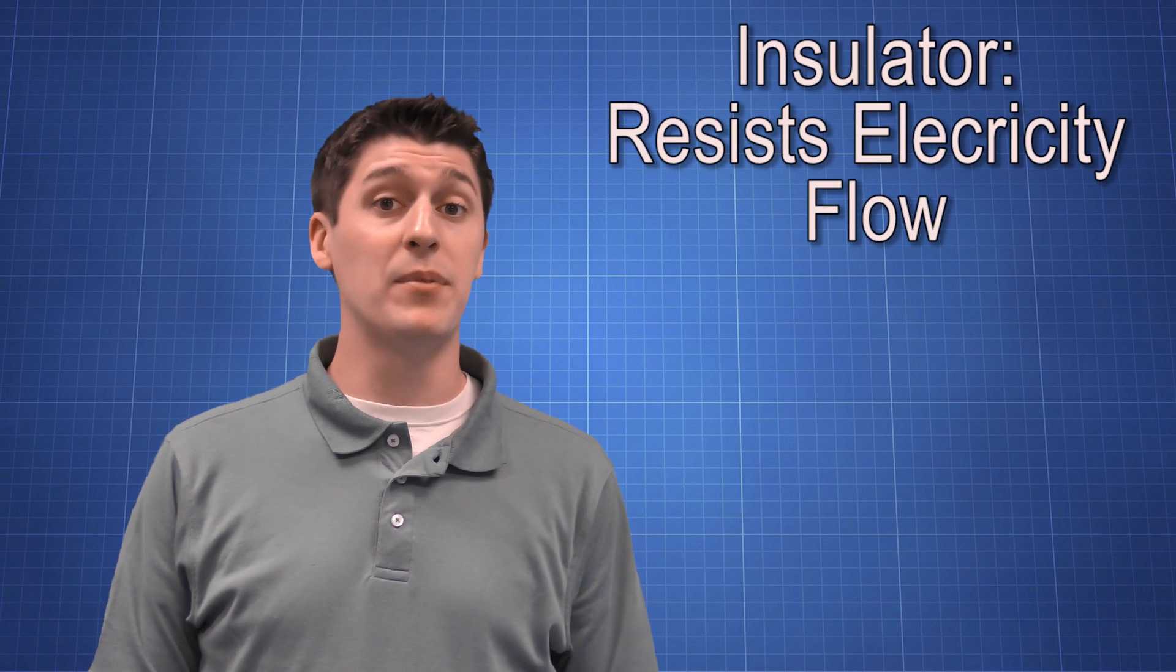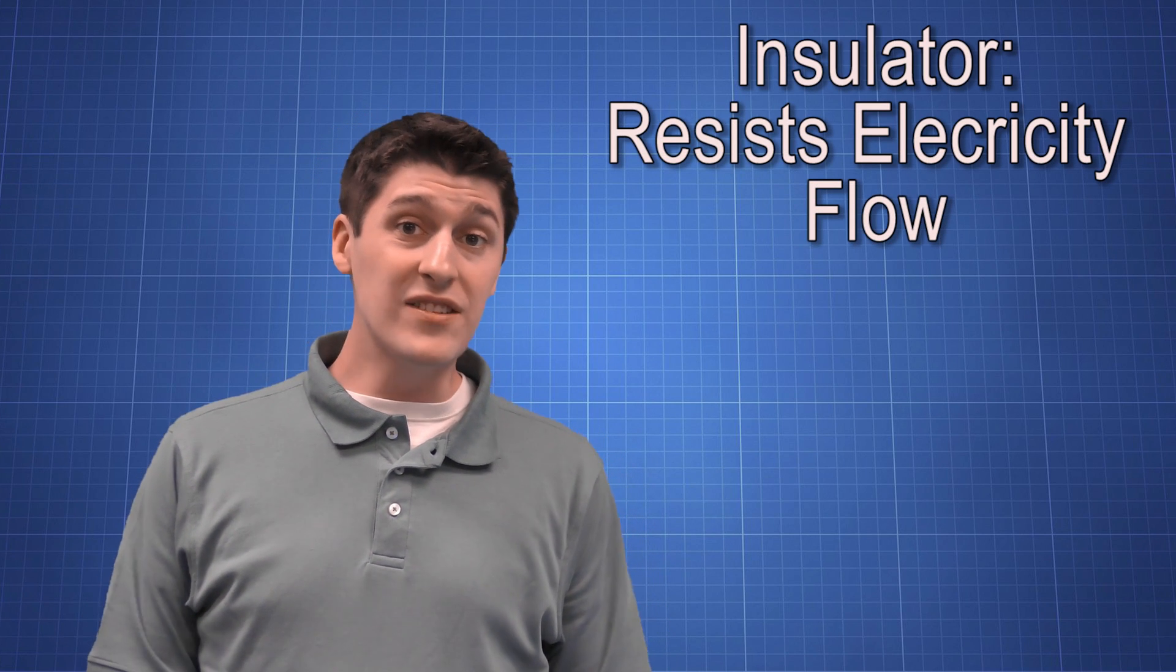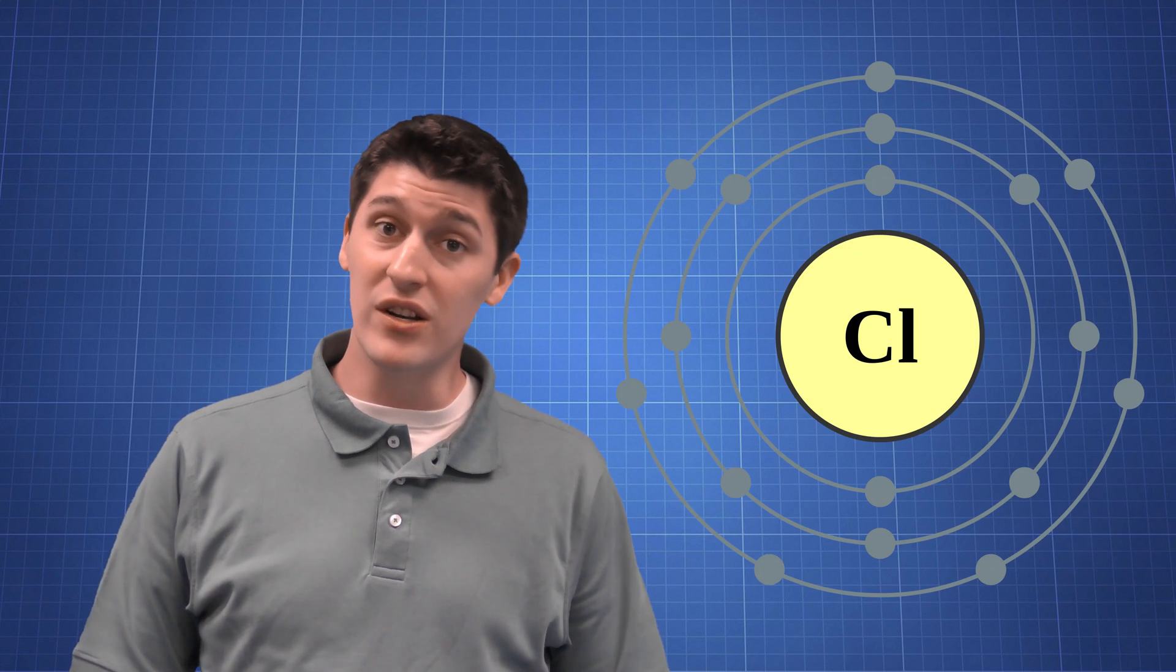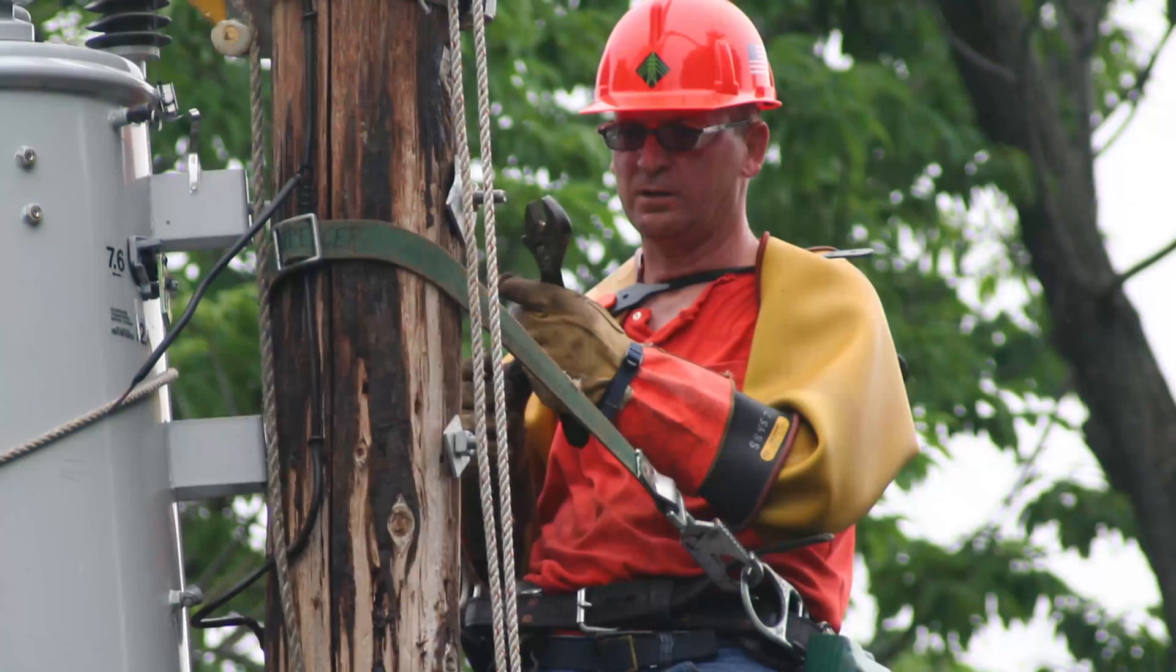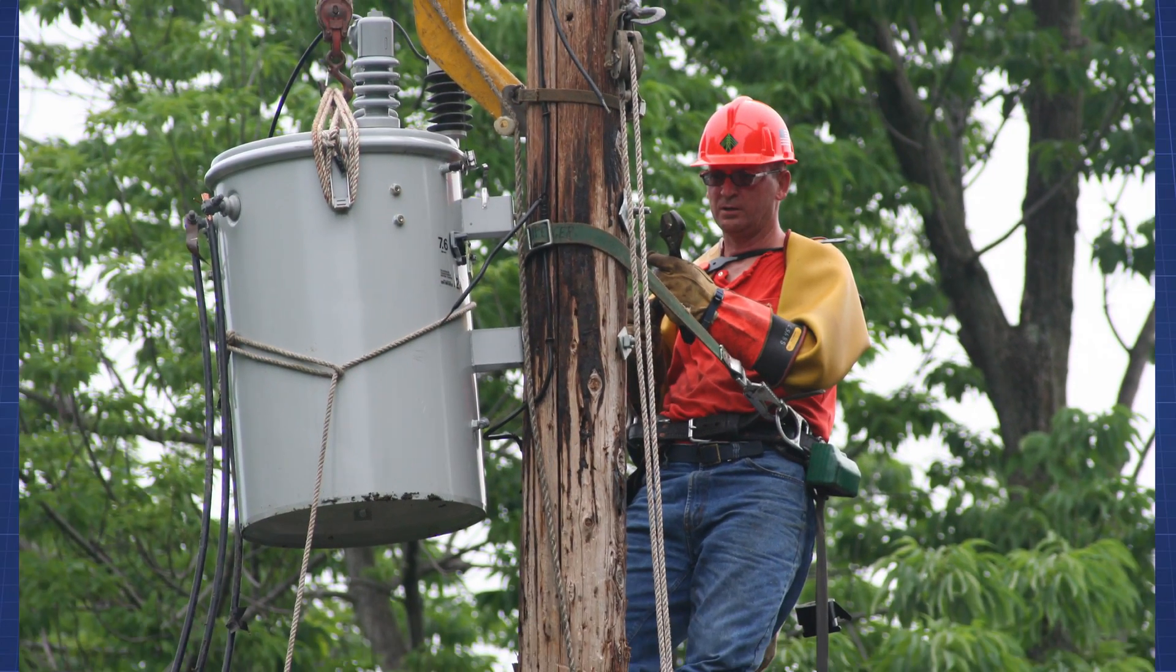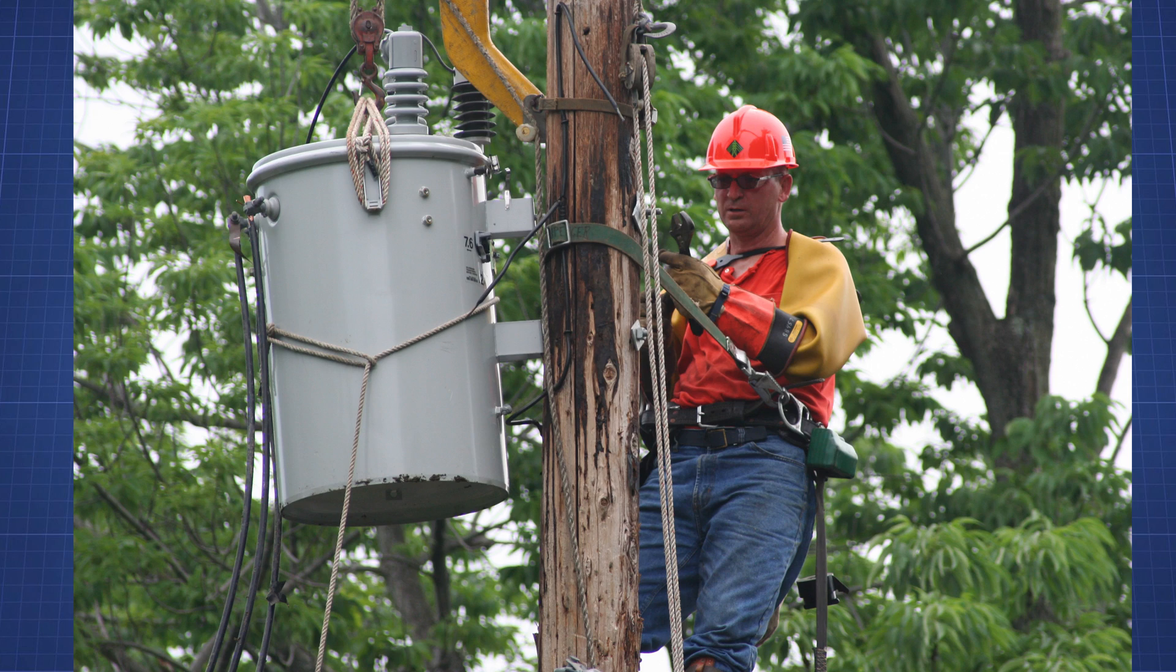An insulator is the opposite of a conductor. Insulators do not allow electrons to move freely through them because there aren't very many free spaces in that outer orbital. Electricians wear rubber gloves and rubber boots to protect themselves from the electricity that they are working on while they're on the job because rubber is an insulator.